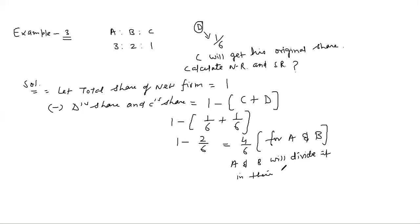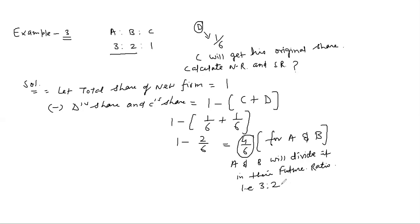A and B will divide the remaining 4/6 in their future ratio. In this question, if it is not given what A and B's future ratio will be after D's admission, then by default we assume their future ratio remains what it was before. A and B's old ratio was 3:2. So they will divide 4/6 — the balancing figure — in their future ratio of 3:2. A's new share will be calculated as 4/6 multiplied by 3/5.